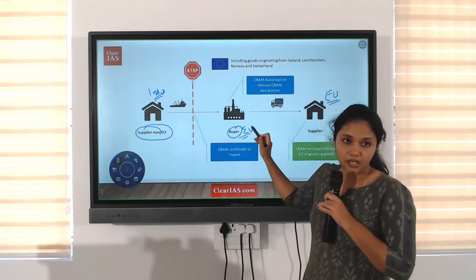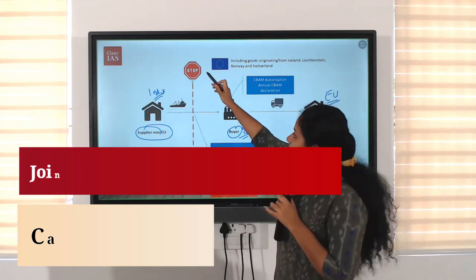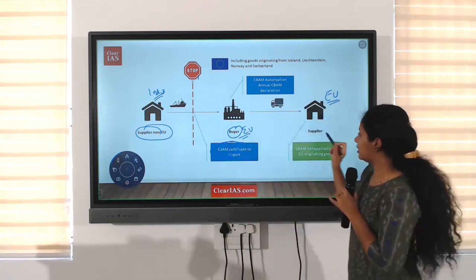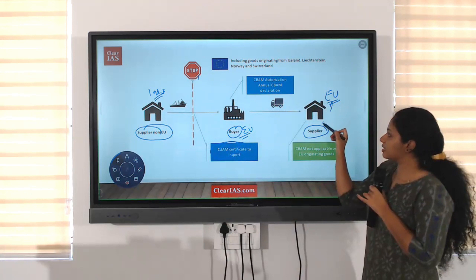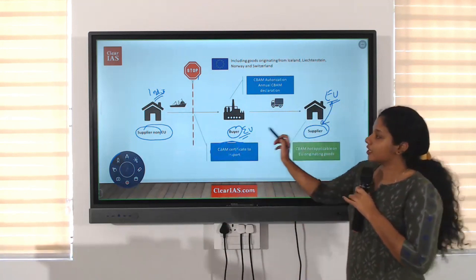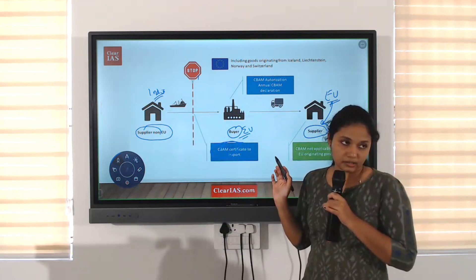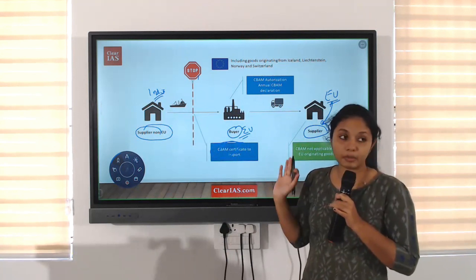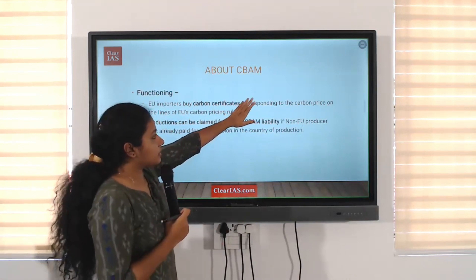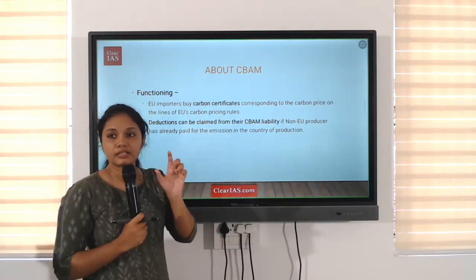For example, if India is exporting something and a buyer in the EU imports from India, the buyer will need a CBAM certificate. But this is not needed if the supplier is also from an EU country — that is the key difference. If from outside the EU, a certificate is needed; if from within the EU, no certificate is required.